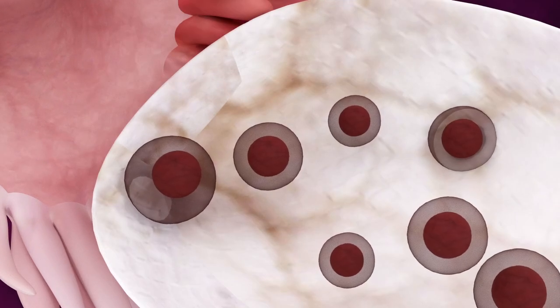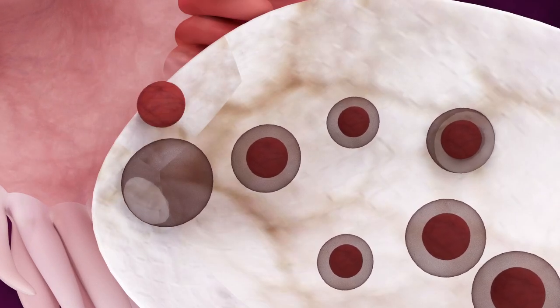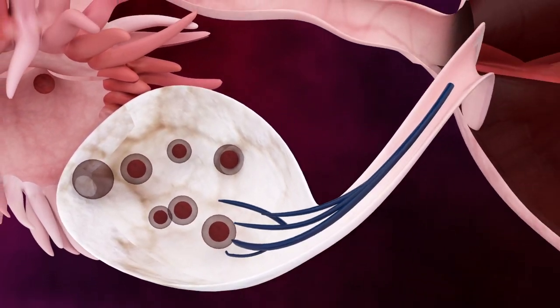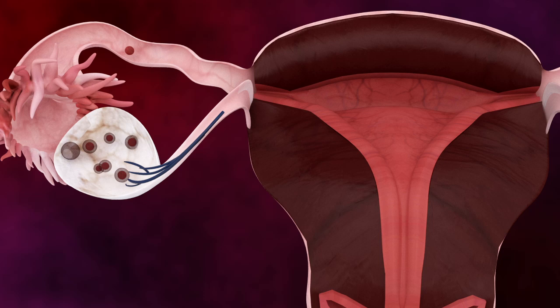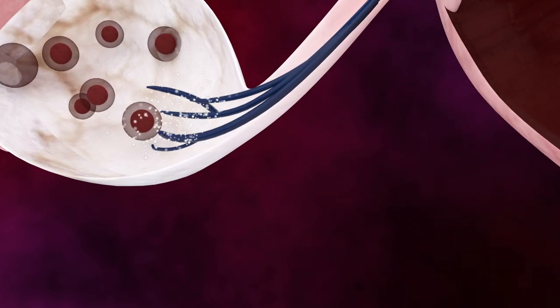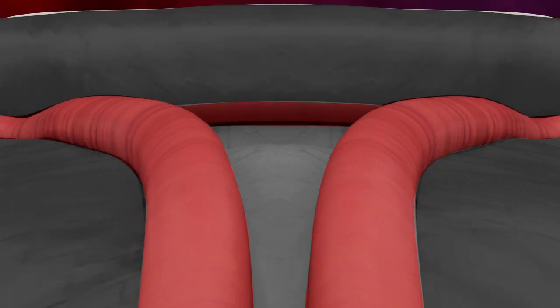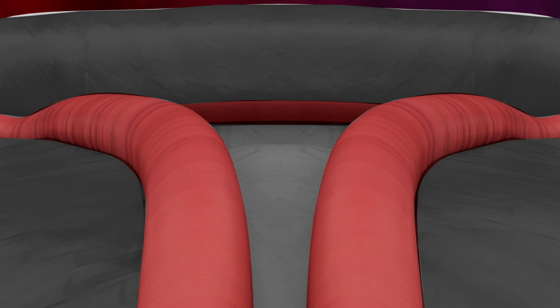Around day 13 to 15, the mature egg is released into the fallopian tube. This is ovulation. At the same time, the ovary releases estrogen, thickening the uterine wall to get ready for a possible pregnancy.